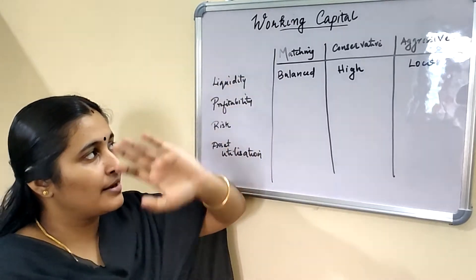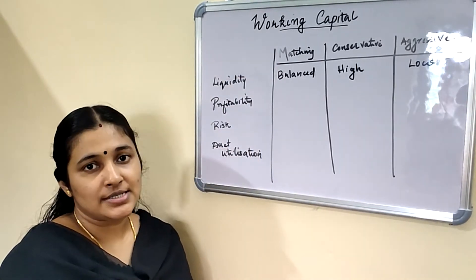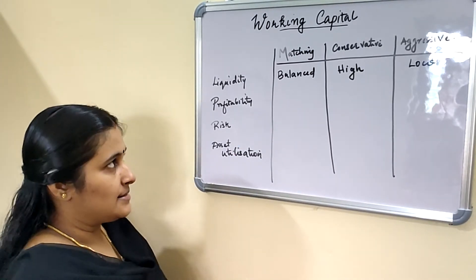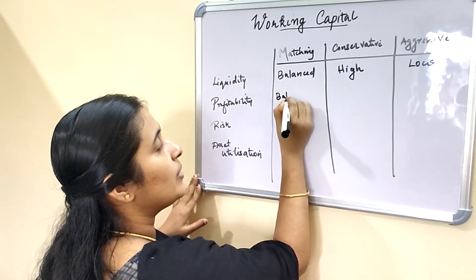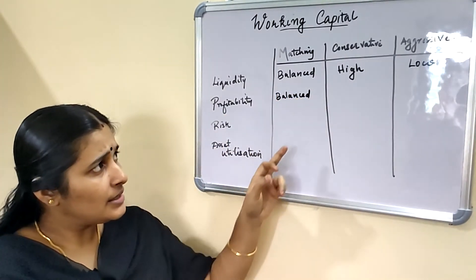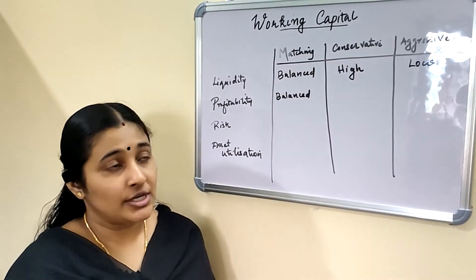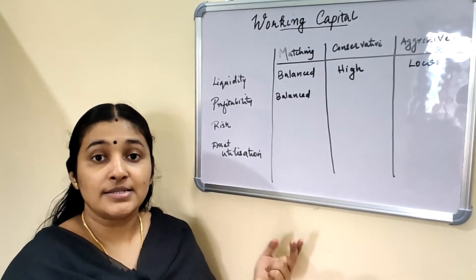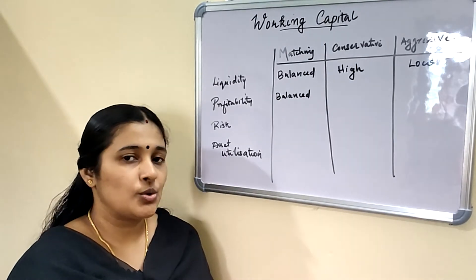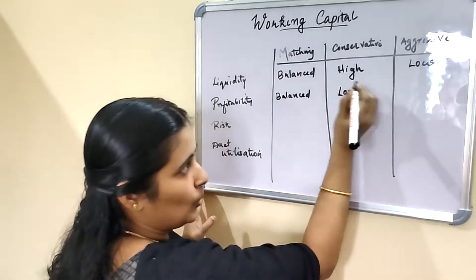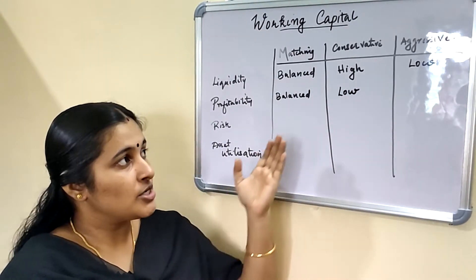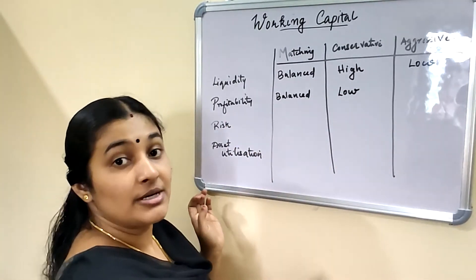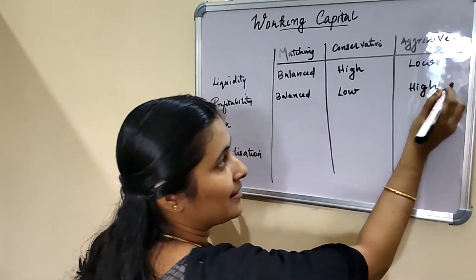In terms of profitability, in the matching approach, short-term funds are used to meet short-term assets and long-term funds are used to meet long-term assets, so profitability is balanced. In the conservative approach, long-term funds are used to meet fixed assets, permanent assets, and part of temporary assets, so profitability will be low. But in the aggressive approach, short-term funds are more heavily used, so profitability will be high.